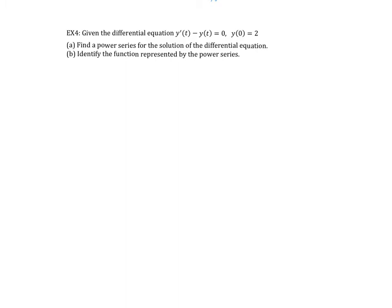In Example 4 — a fun example going back to differential equations — we have the differential equation y' - y = 0 with initial condition y(0) = 2. For part A, we want a power series for the solution y(t). Adding y to both sides gives y' = y. Taking derivatives: y'' = y', y''' = y'', and so on. This gives us the pattern that all derivatives of y equal the function itself.